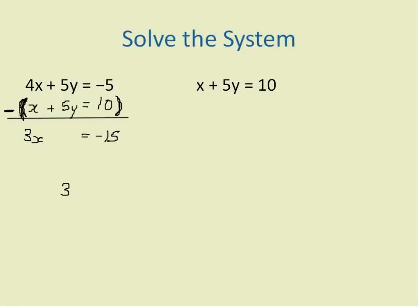So 3x is equal to negative 15. I'm going to divide both sides of the equation by 3, giving me that x is equal to negative 5.